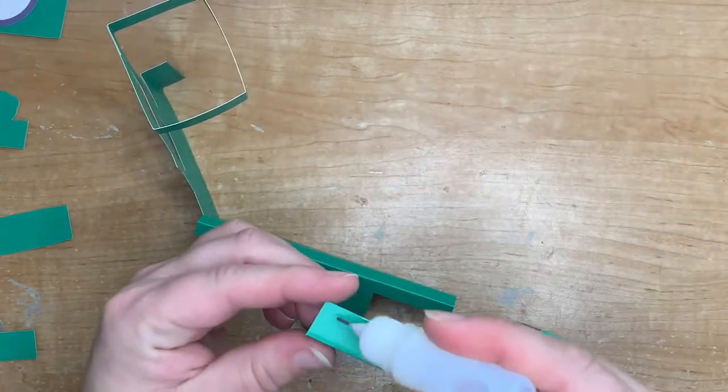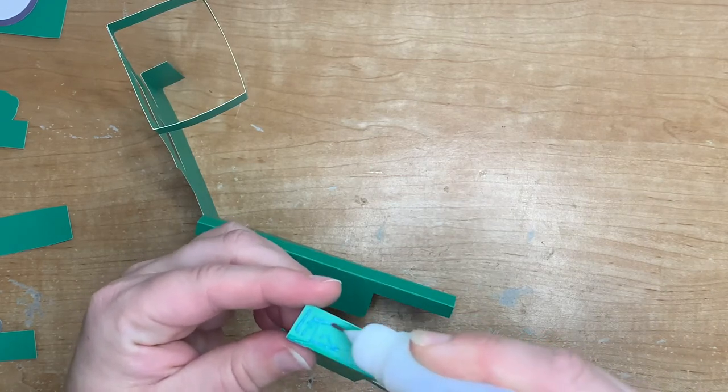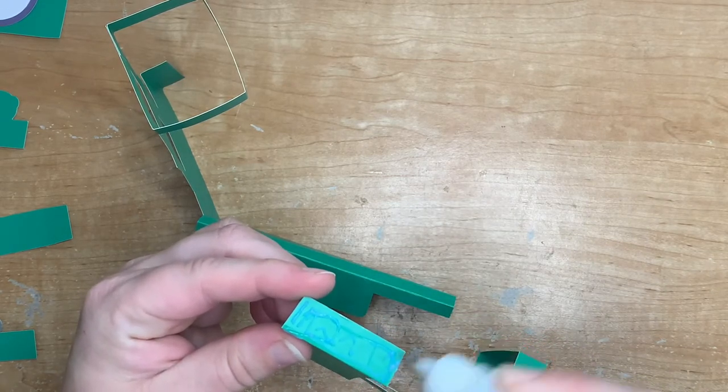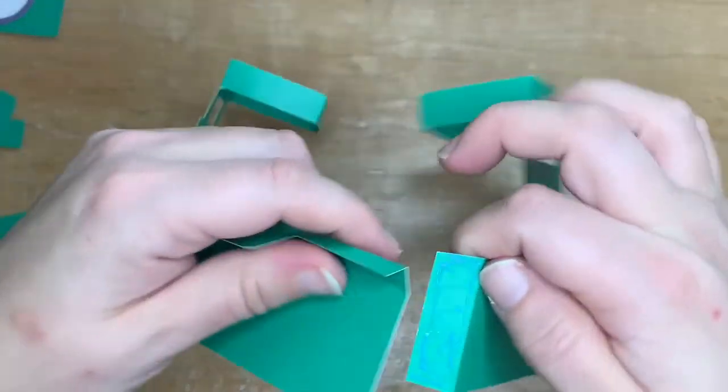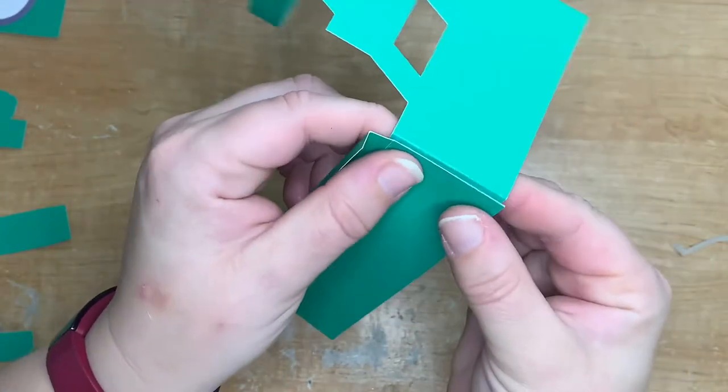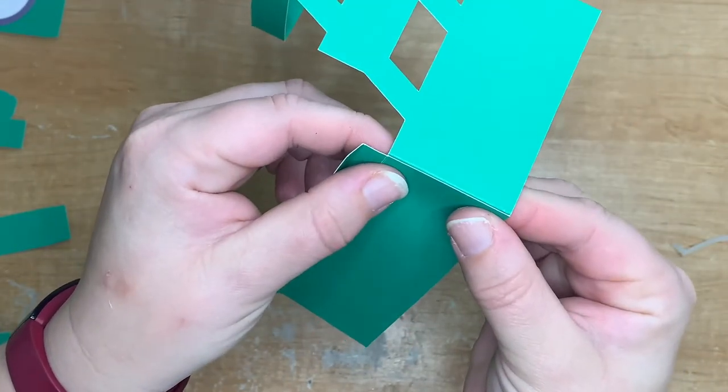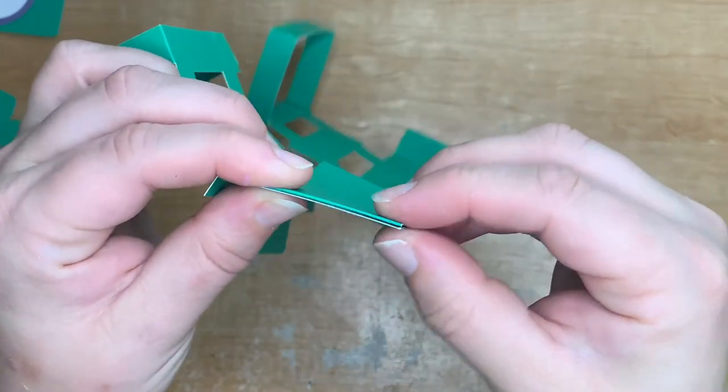Add some glue to this tab and then connect it to the longer piece at the front section. This is going to create three of the sides of your tackle box. Hold it in place until the glue is dry and make sure the bottom is lined up because it needs to be flush at the bottom in order to stand up once it's finished.